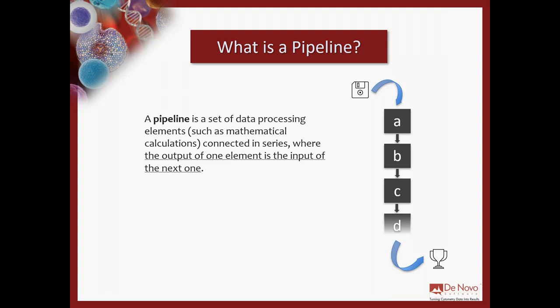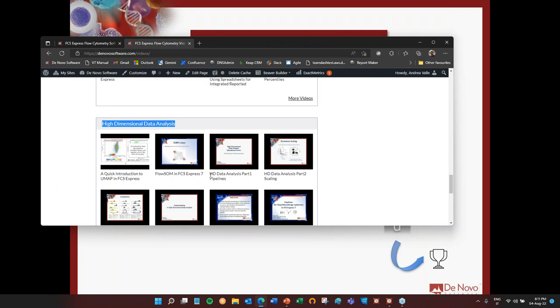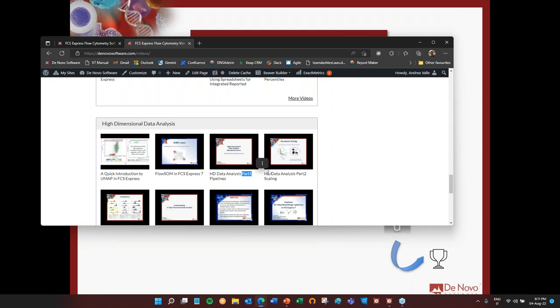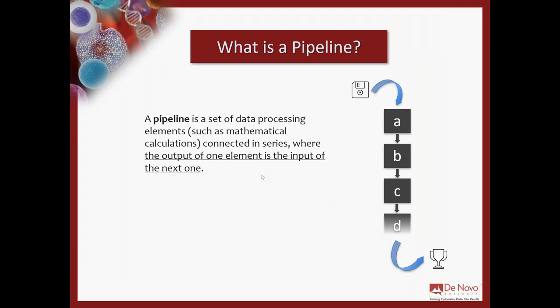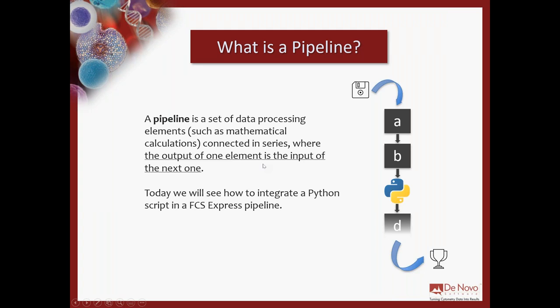On our website we already have a webinar that speaks about pipelines — that's part one of this series, followed by parts two, three, and four. Today we will speak about something that comes afterward: how to integrate Python into your pipeline. The idea is that you create the pipeline, run your pre-processing steps, then start adding algorithms — it can be UMAP, tSNE, FlowSOM, and it can also be Python. It's just a new way of running algorithms for high dimensional data analysis. There is nothing to be scared of.